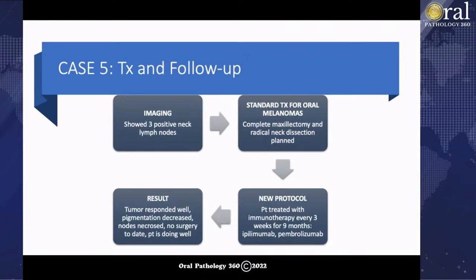In terms of treatment and follow-up, imaging revealed three positive neck lymph nodes. The standard treatment for this case was a complete maxillectomy and radical neck dissection, which would really affect the quality of life of this relatively young 49-year-old patient. I had a melanoma oncology expert contact at NYU, and we decided to try a protocol of immunotherapy. This patient had immunotherapy every three weeks for nine months — ipilimumab and pembrolizumab — and responded very, very well. Pigmentation decreased, the tumor responded well, the nodes necrosed, and the patient has had no surgery to date.